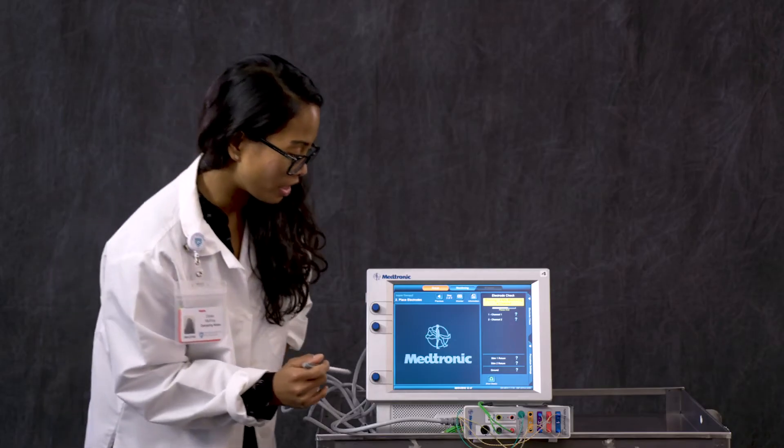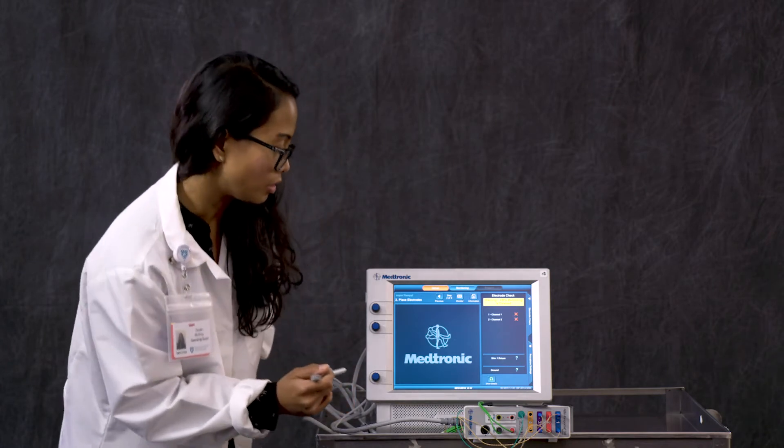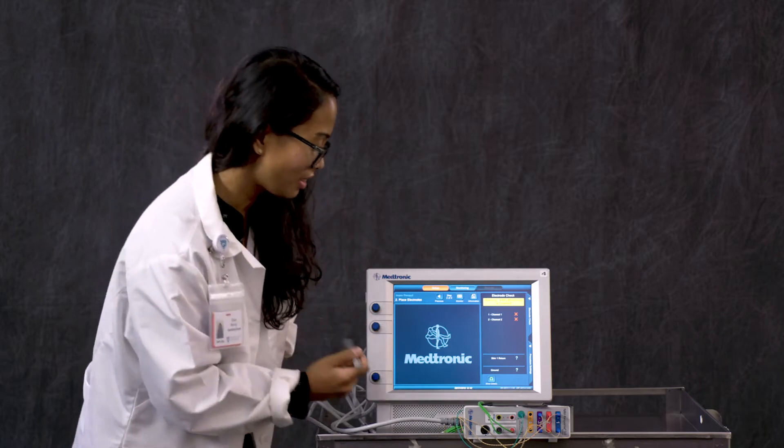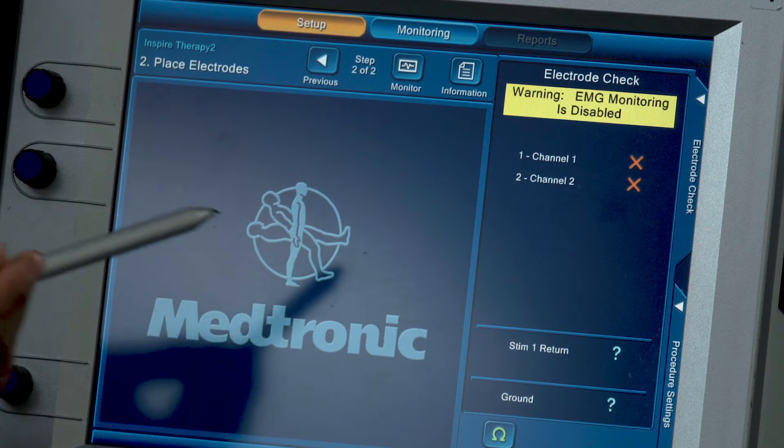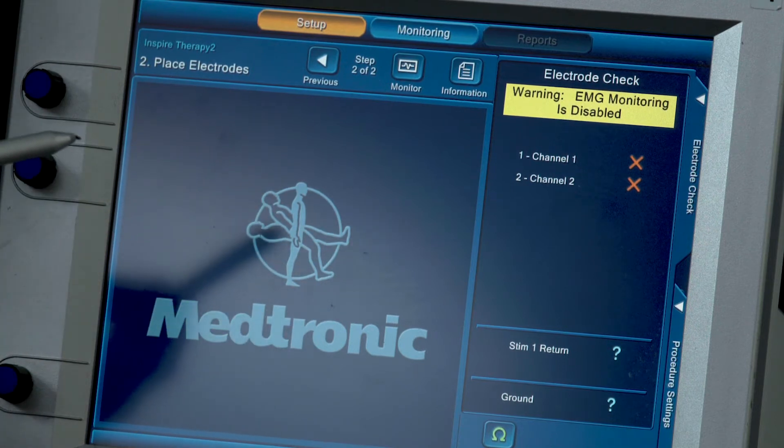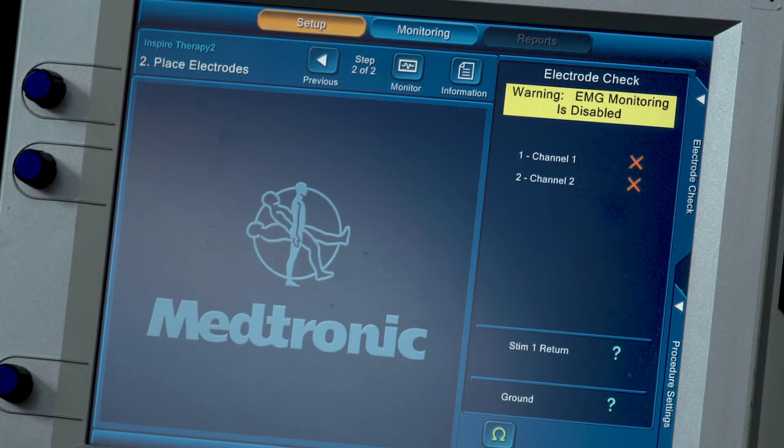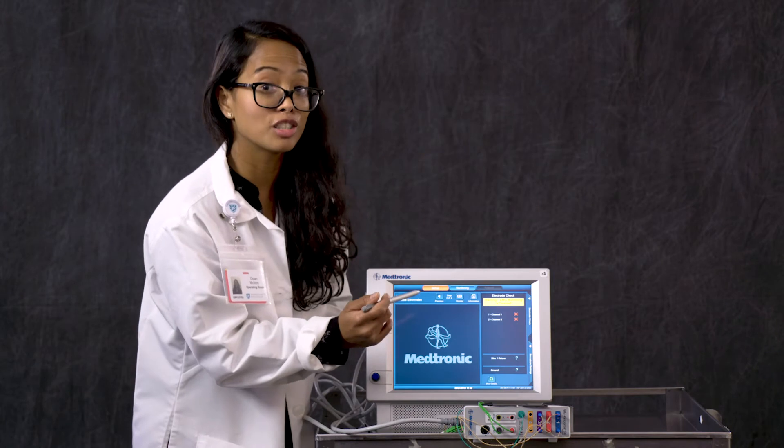Now that we are here on our setup screen, the first thing that you want to do when you are here is take a look at the screen. Here we have our electrode check panel. This is usually what comes up right after you have made a procedure, and since we haven't plugged anything in yet, you are going to get these X's which means we are not hooked up properly.